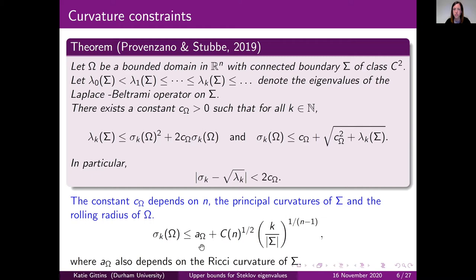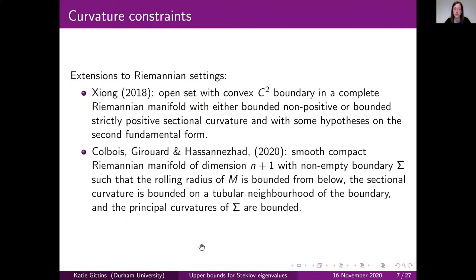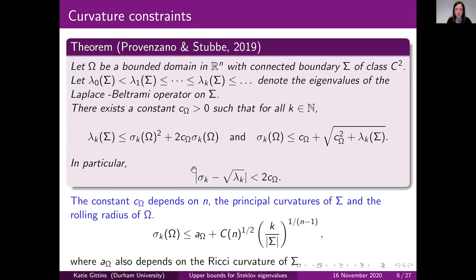There were generalizations of this to Riemannian settings. Jung in 2018 considered an open set with convex C^2 boundary in a complete manifold with additional hypotheses on sectional curvature and the second fundamental form. Then Colbois–Jezouin–Hassannezhad in 2020 obtained analogous results for similar constraints — rolling radius, principal curvatures of the boundary, and sectional curvatures — from which you can obtain upper bounds with an optimal exponent of k, but paying a price in the geometry.